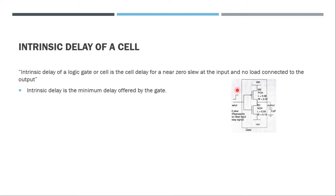With zero input slew, the signal rises from zero to one instantaneously. With zero output load, it doesn't mean there is no capacitance at all — the cell's own parasitic capacitance is still present. However, we do not consider capacitance from connected cells or wires. There are many factors affecting cell delay, which we will now try to understand.